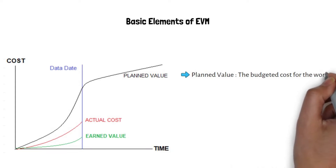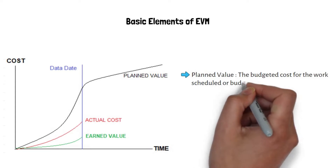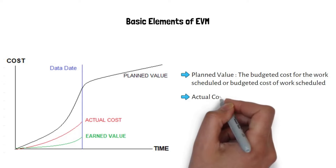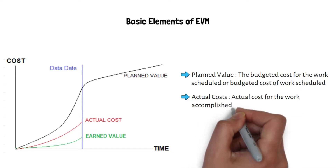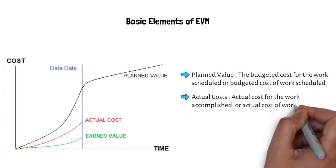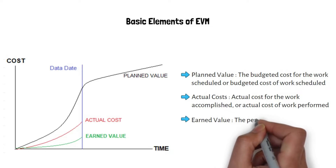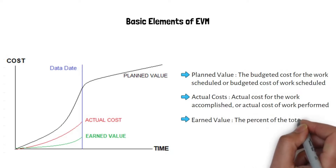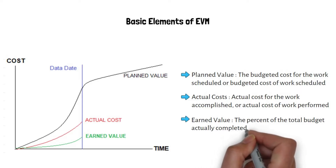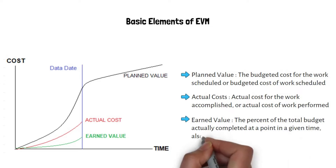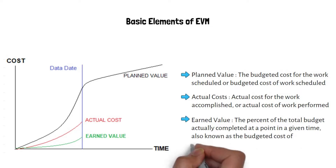The basic elements of EVM are: Planned Value, which is the budgeted cost of work scheduled; Actual Cost, which is the actual cost of work performed; and Earned Value, which is the percent of the total budget actually completed at a given point in time. It is also known as the budgeted cost of work performed.